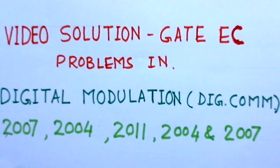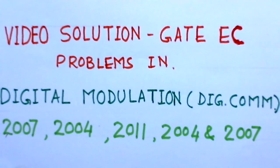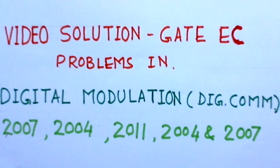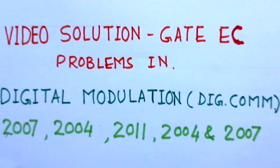The last problem is of GATE 2007. This problem is based on the raised cosine pulse, which is used for zero inter-symbol interference. The expression for P(T) needs to be simplified. So these are very basic problems bringing out varied concepts.